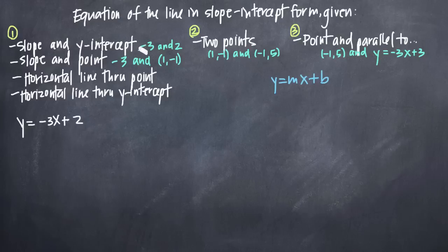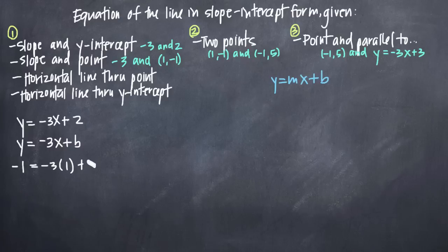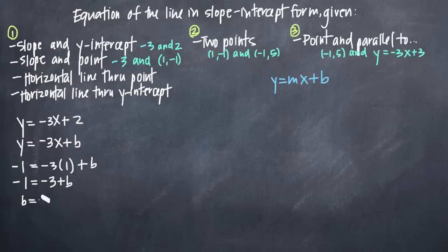That's the easiest possible scenario. If you're given a slope and a point — for example, slope negative 3 and the point (1, negative 1) — you would plug in the slope and get y equals negative 3x plus b. Then using your point, you'd plug 1 in for x and negative 1 in for y, getting negative 1 equals negative 3 times 1 plus b. Solving for b: negative 1 equals negative 3 plus b, and adding 3 to both sides, we see that b is equal to 2.